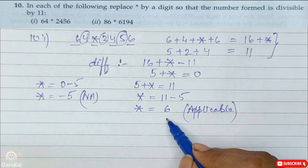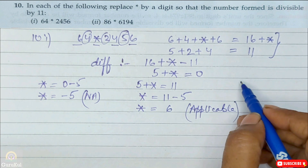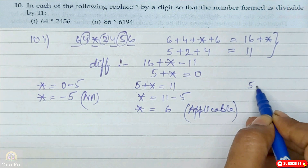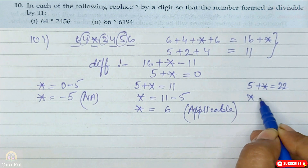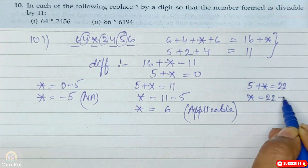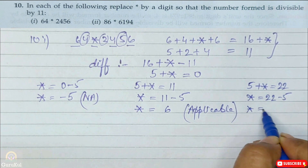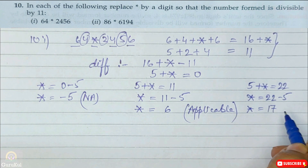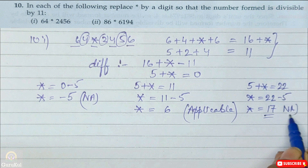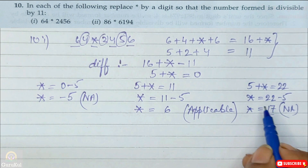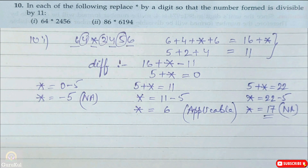Star's value is 6 — that is a single digit and applicable. If we try 5 plus star equals 22, then star equals 17, which is a double-digit number and therefore not applicable. This is why all steps were clearly explained — to show which values we accept and which we do not.